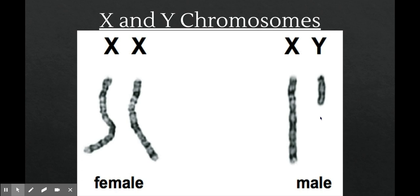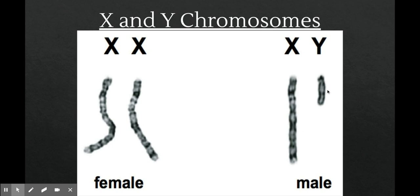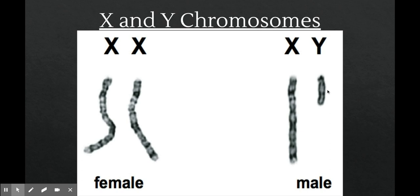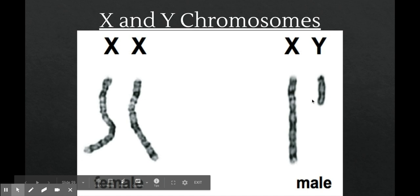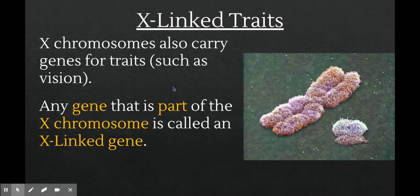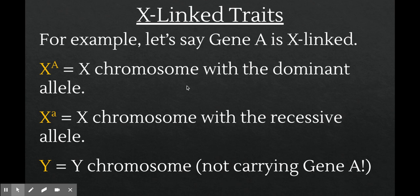These are actual microscope images of X and Y chromosomes, and one thing I want you to notice is how different they are. X chromosomes are really large with a lot of genes, whereas Y chromosomes are relatively small with not many genes. Most genes on the Y chromosome are male-specific and have to do with male development. But the X chromosome is inherited by everybody — both males and females — so there are many genes on the X chromosome related to sex development but also to other things. Any gene on the X chromosome is called an X-linked gene. For example, there are many genes on the X chromosome related to vision, and they would all be X-linked genes.